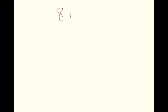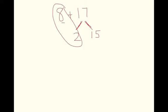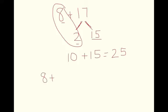First example: 8 plus 17. Using the branching strategy, I think about how I can decompose these numbers to make friendlier landmark numbers. I'm going to think of 17 as 2 plus 15 — notice this looks kind of like a slanted equal sign. I go ahead and combine 8 and 2: 8 plus 2 is 10, plus 15 equals 25. You could also have students represent this with equations: 8 plus 2 equals 10, then 10 plus 15 equals 25.